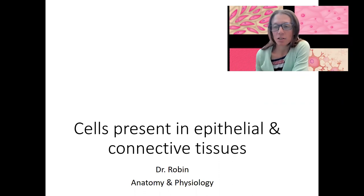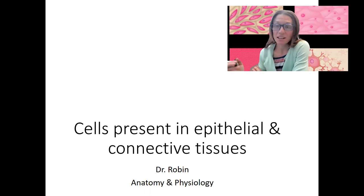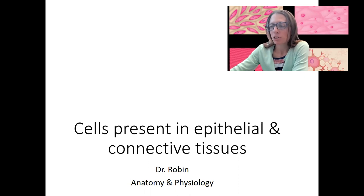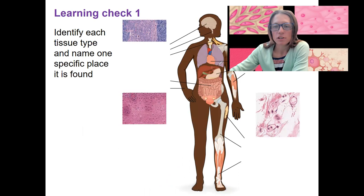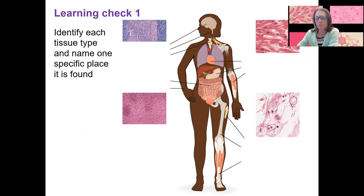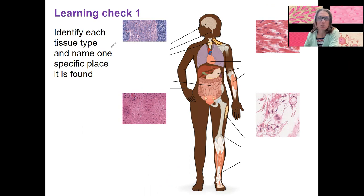Before we go into detail on the specifics of epithelial and connective tissues, I want to talk about the cells we're going to find there — going back to cell types and what we're going to see in the different tissue types. To start, I want to use Learning Check One for this week. I'll mostly answer it as I talk about the cell types, but you should answer tissue type and one place it's found. I'd like to focus on epithelial and connective and tell you about what cells you expect to find.